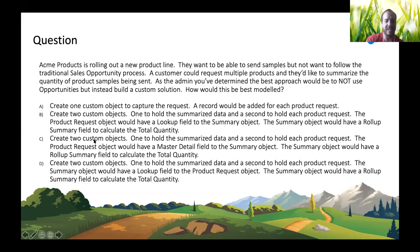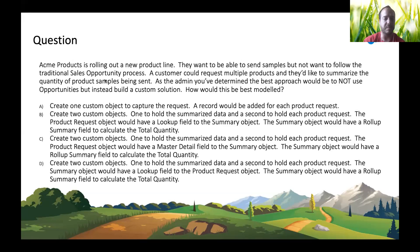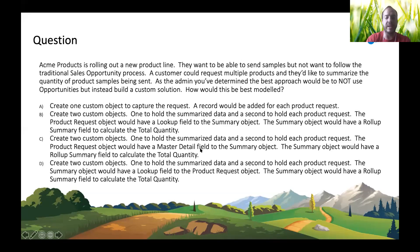The correct answer is option C: two objects with master-detail and a roll-up summary. Options B and D can be eliminated because when you have a lookup field you cannot have a roll-up summary — the only way to have a roll-up summary is with a master-detail relationship.